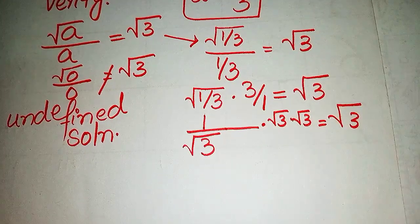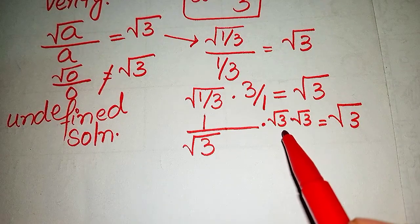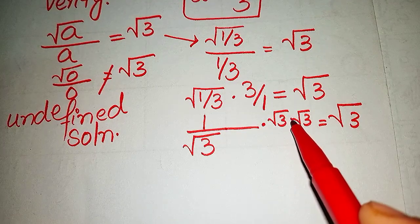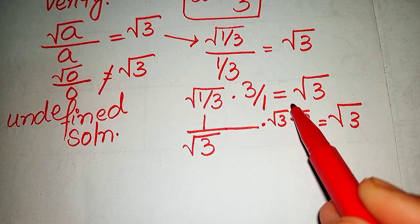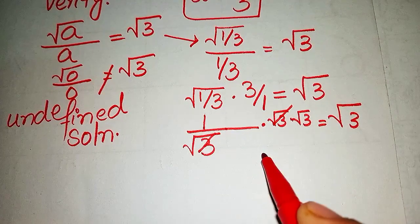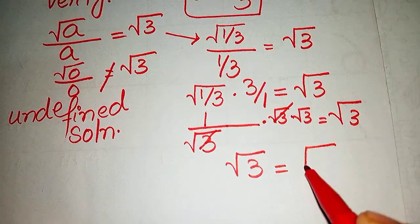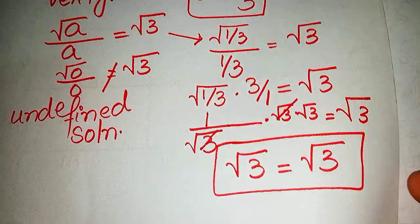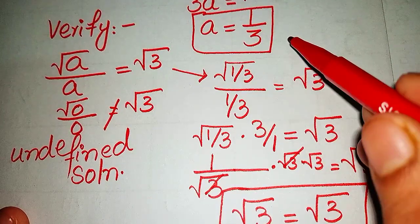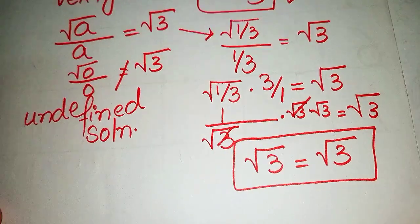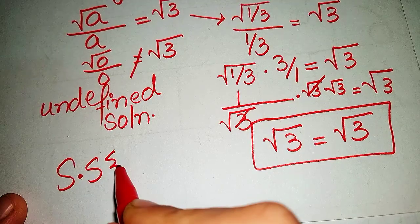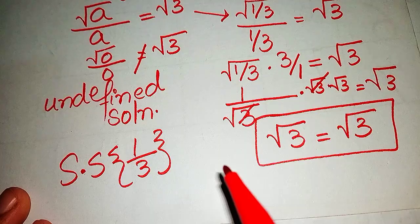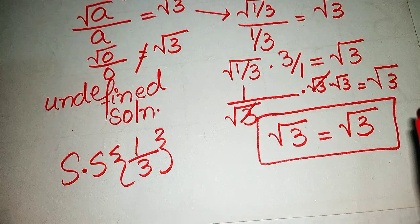This simplifies to √3, since √3 · √3 / √3 = √3. So √3 = √3, which is true. Therefore the solution set for our given equation is a = 1/3, which verifies the equation. The solution set is {1/3}.